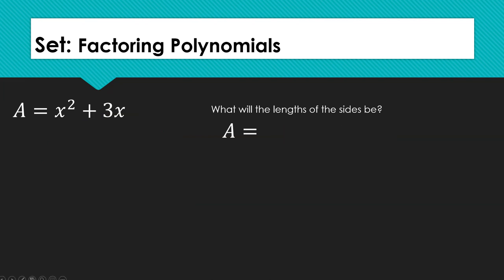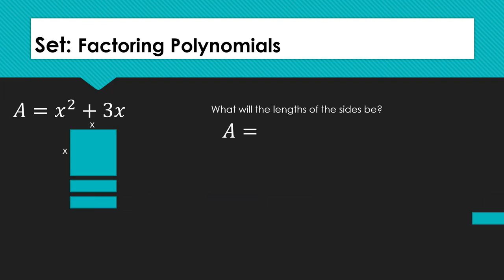Let's look at one more example. Again, we see that the first term is x squared, which means we are starting with a large square with dimensions x by x. We also see that we have 3 x's, which are represented by rectangles with dimensions x by 1. We do not have a third or constant term, so we don't have any small squares. We have formed a complete rectangle, so we can label the sides of the entire rectangle. We find that the linear factors are x and x plus 3.